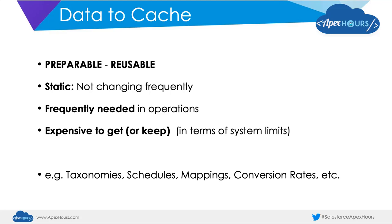Good examples of data to cache include taxonomies, schedules that are relatively static and useful for multiple use cases, mappings of objects to each other, conversion rates, and app configuration — even though app config could also be stored in custom metadata types. Platform cache can speed up access to data previously stored in custom settings, though the data should still live in custom settings so you can rebuild the cache when needed.